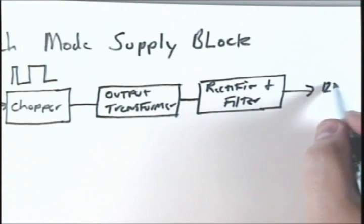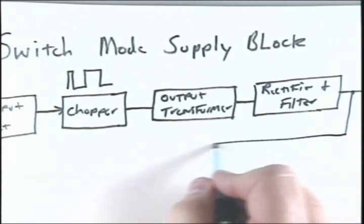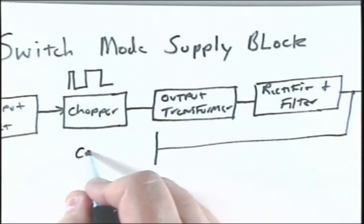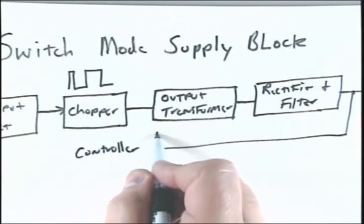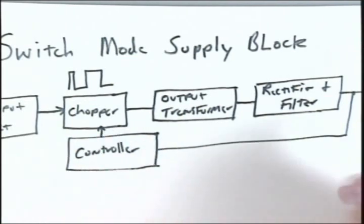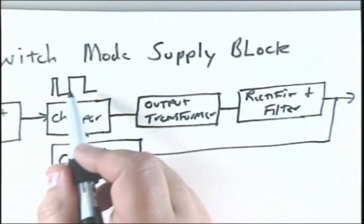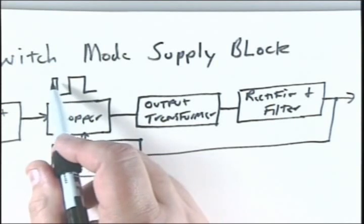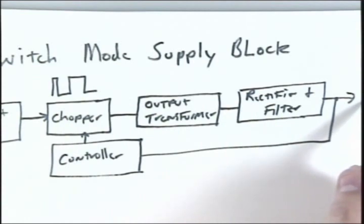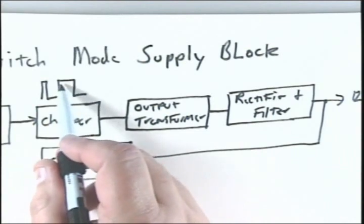We would then take a sample of this and feed it back to another block, which would be the controller. The controller would then feed back to the chopper. When this started to go higher than 12 volts DC over here, then it would decrease the amount of on time to make the voltage go down. If this started going lower than 12 volts DC over here, it would then cause the length of the on time to increase, therefore giving you a higher voltage.